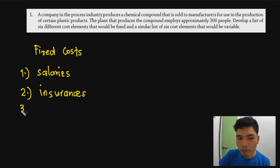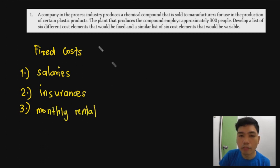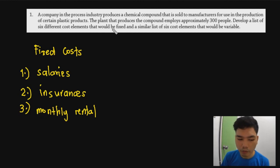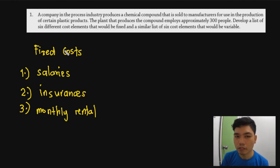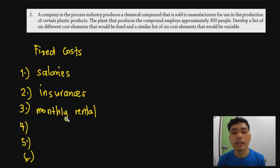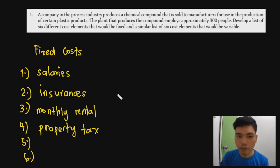The third fixed cost is monthly rental. This could refer to the company's own rental, or possibly the workers' monthly rent for boarding. Fourth is property tax - if the company owns its own property or land, they have to pay a fixed property tax.